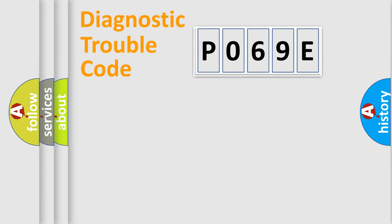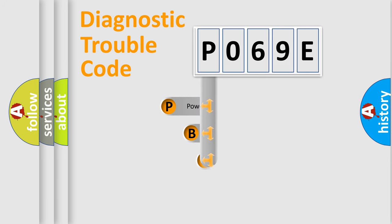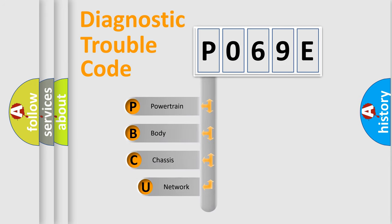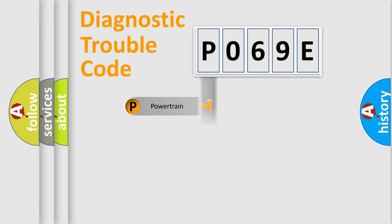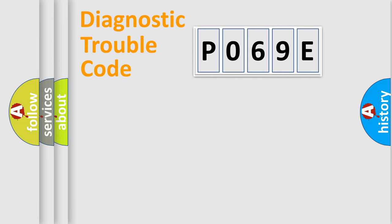First, let's look at the history of diagnostic fault code composition according to the OBD2 protocol, which is unified for all automakers since 2000. We divide the electric system of an automobile into four basic units: Powertrain, Body, Chassis, and Network. This distribution is defined in the first character of the code.